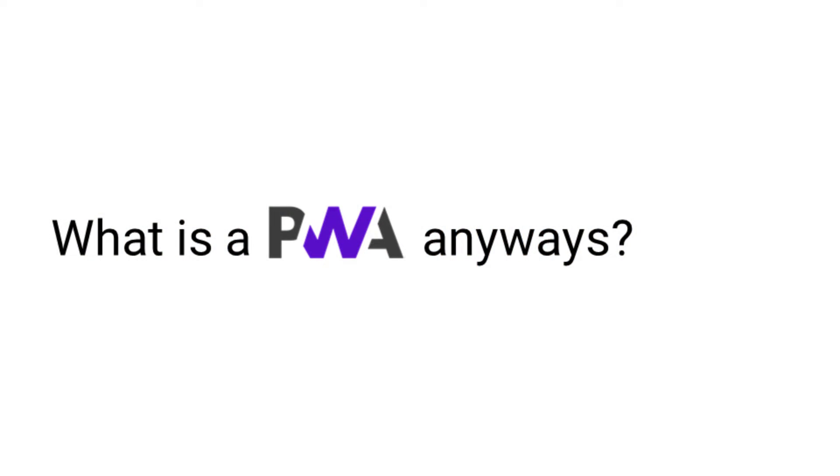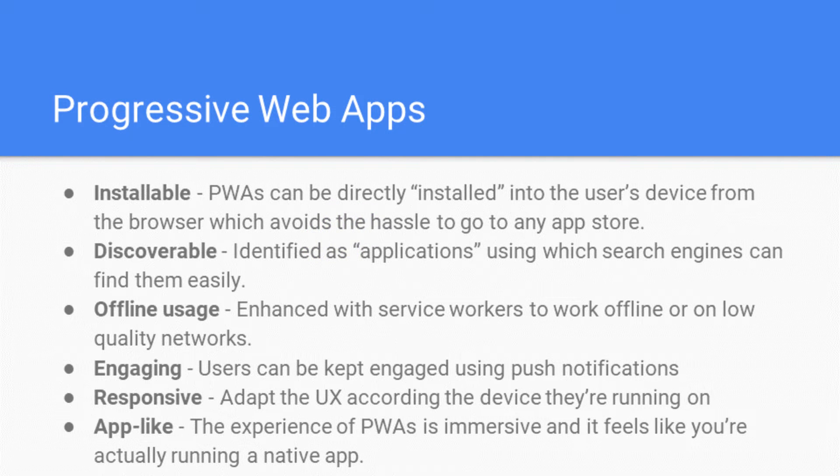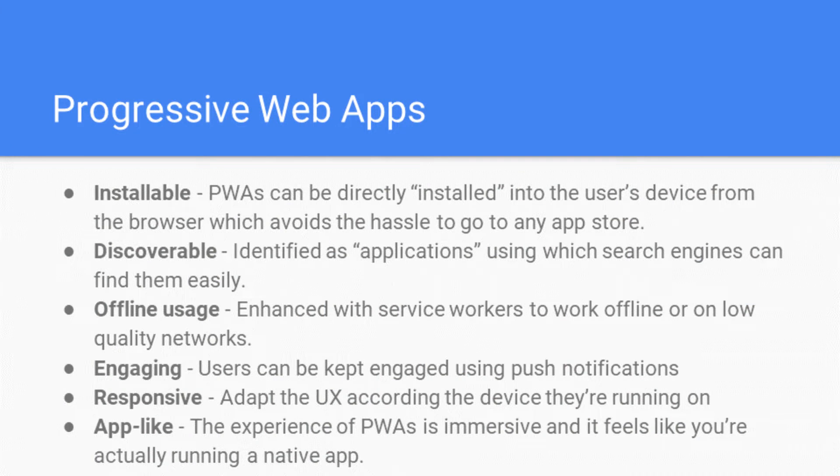So what is a Progressive Web App? Let's talk about that first, and then we'll talk about what is a desktop PWA. Progressive web apps are basically installable — that is the first property. You don't have to go to any app store or Play Store; progressive web apps are downloadable from your browser, and most browsers now support that. You can install a web application right into your device, and on Android you will have the app's icon on your launcher.